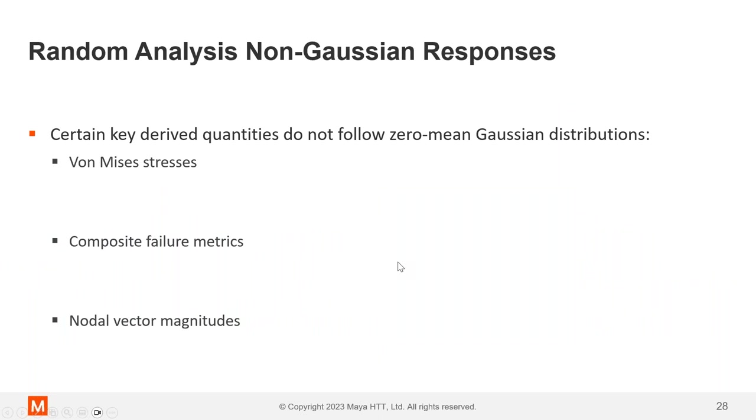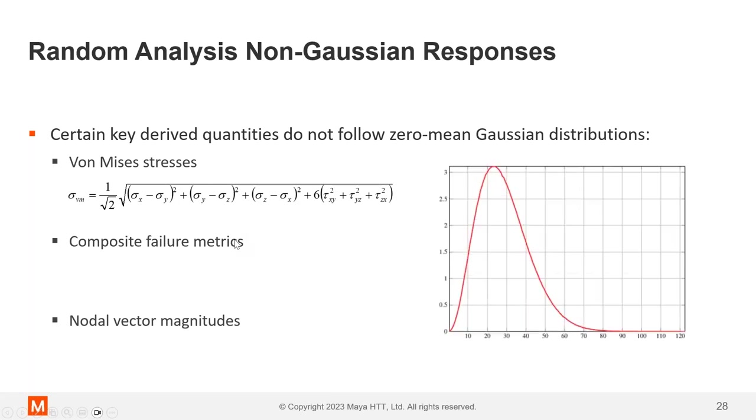Now, random analysis, there are non Gaussian responses. So we're talking about the time history itself is a zero mean Gaussian response. But there are certain things that we're trying to calculate, like von Mises stresses, which are always positive, composite failure metrics, and nodal vector magnitudes that don't follow this zero mean Gaussian distribution. There's something different. So how do we calculate those and how are those usually calculated?